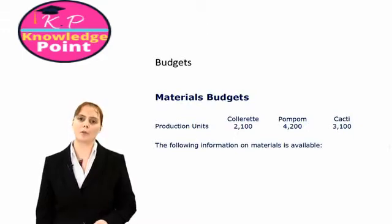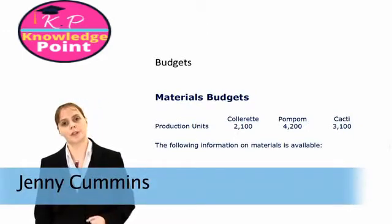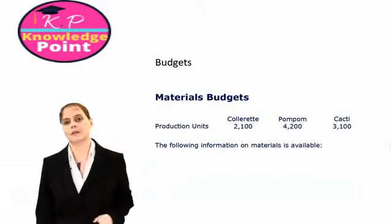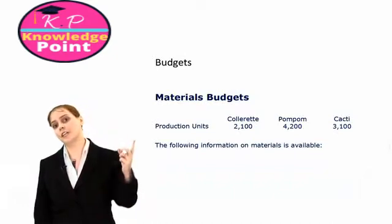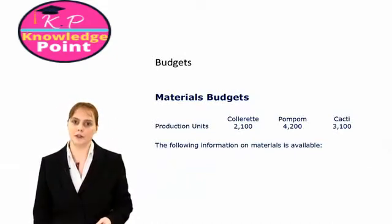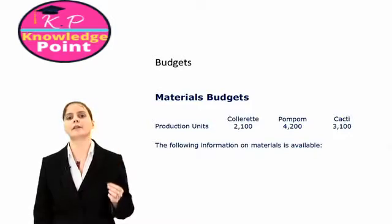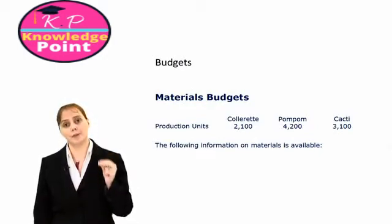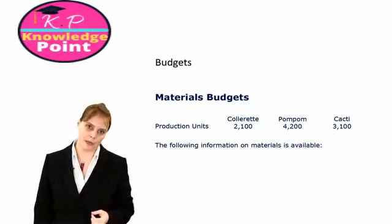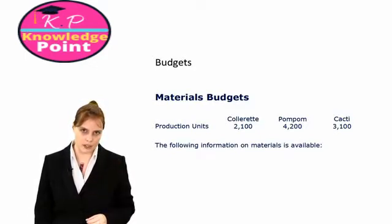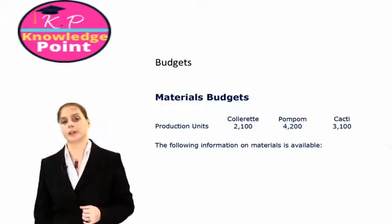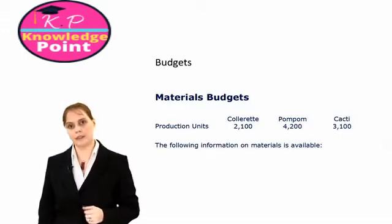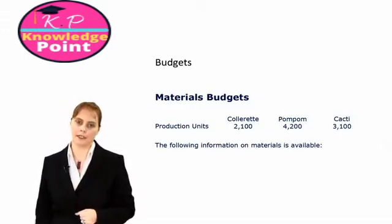Now that we know how many units of our product we're going to produce, we need to look at our materials budget. There are two things we need to consider: how much material we need to produce these units — that will be our materials usage budget — and how much material we need to purchase throughout the year and what that will cost us — that will be our materials purchases budget. Continuing on from our prior exercises, we're going to prepare our materials budget.